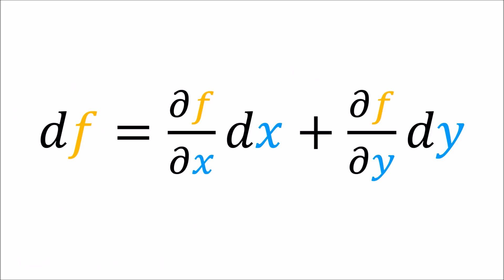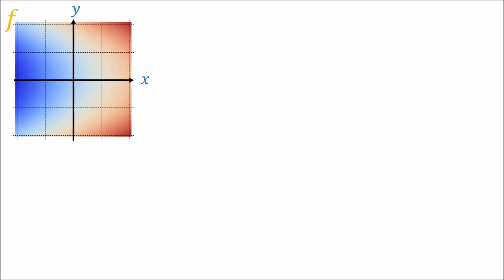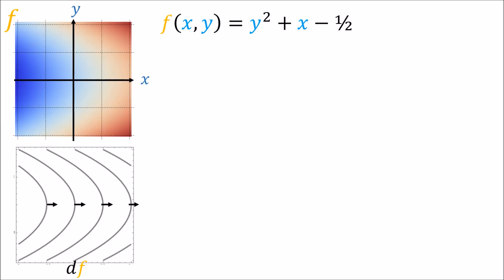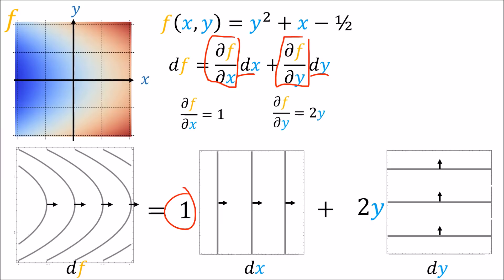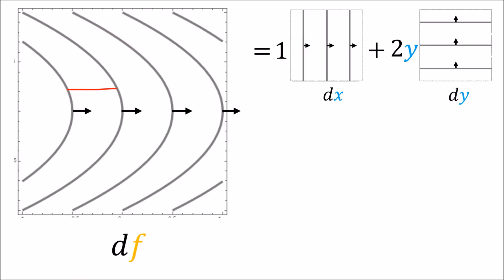Let's go through a concrete example. Take the scalar field f where the point is assigned the value y² + x − 1/2 in Cartesian coordinates. We'd like to expand the covector field df as a linear combination of dx and dy. Computing the partial derivatives: ∂f/∂x = 1 and ∂f/∂y = 2y. So df = 1·dx + 2y·dy. Looking at the covector field df, the horizontal spacing between curves is always equal everywhere, which makes sense because the dx component is constant — so the spacing in the x direction is constant.